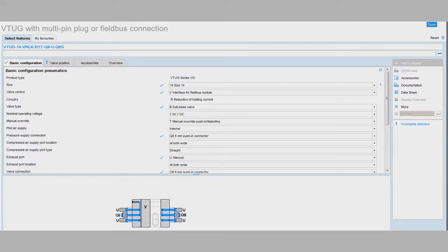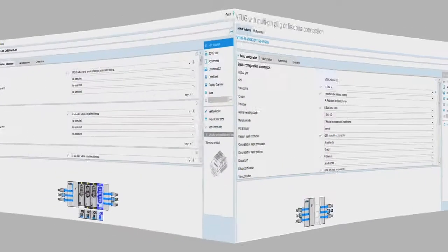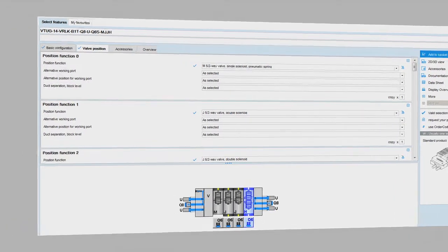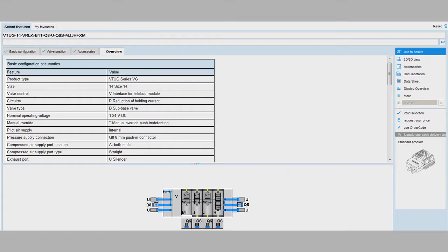Coupled with our online configurator, you can select exactly what modules you require, their position on the manifold, and the whole unit is delivered built and tested, ready for you to mount directly on your machines, saving you time in build and installation costs, as well as costly fault-finding if you had to build the terminal yourself.